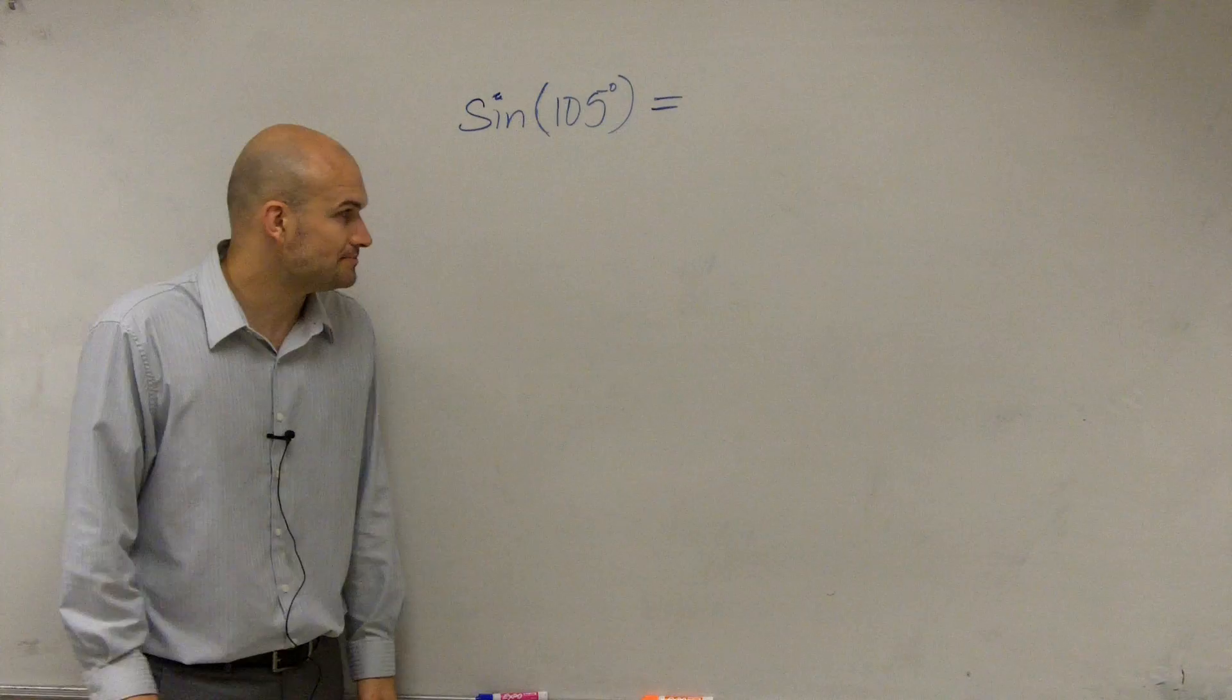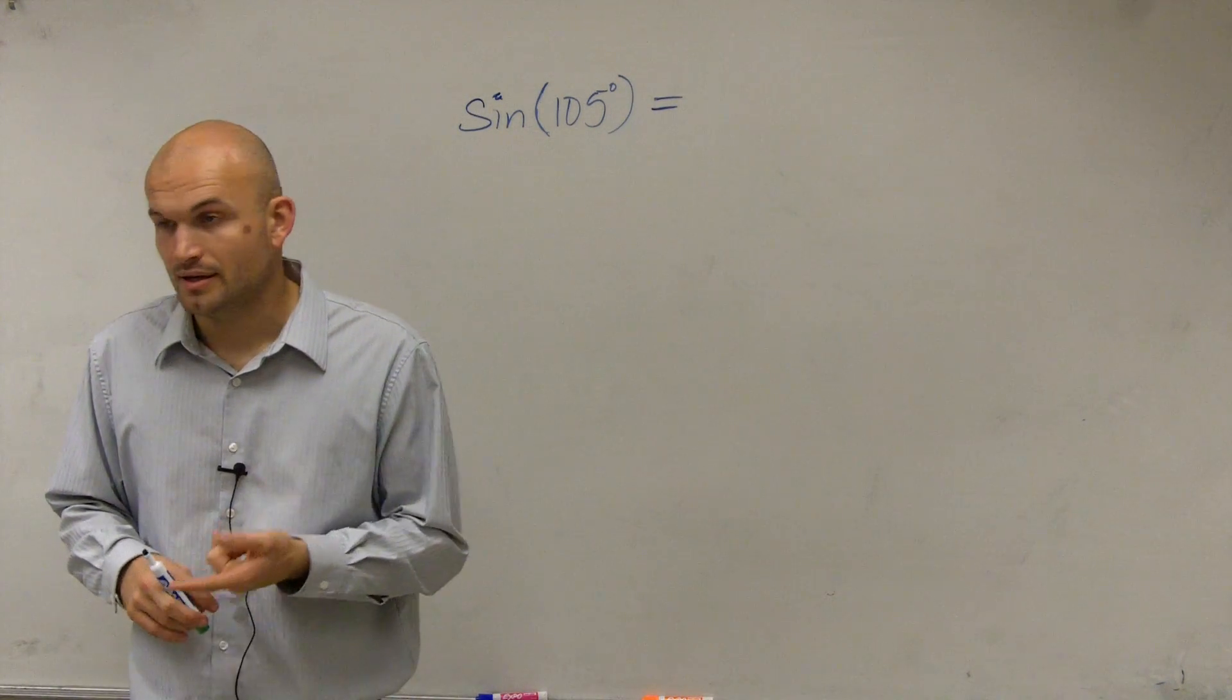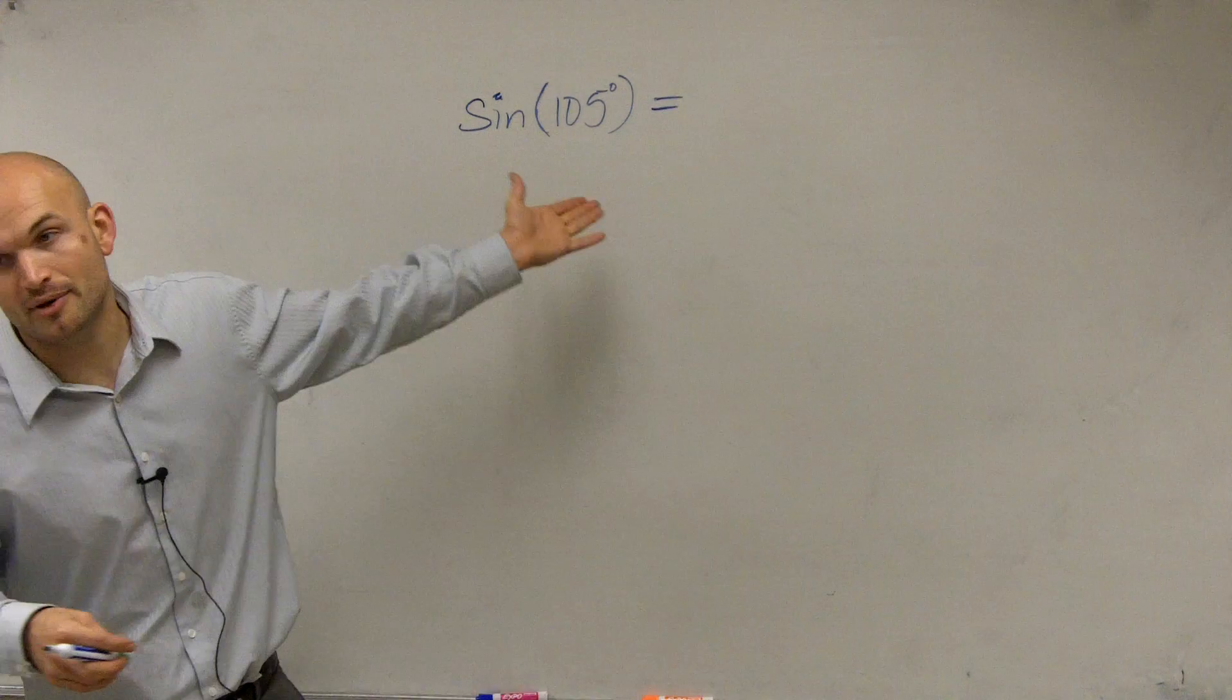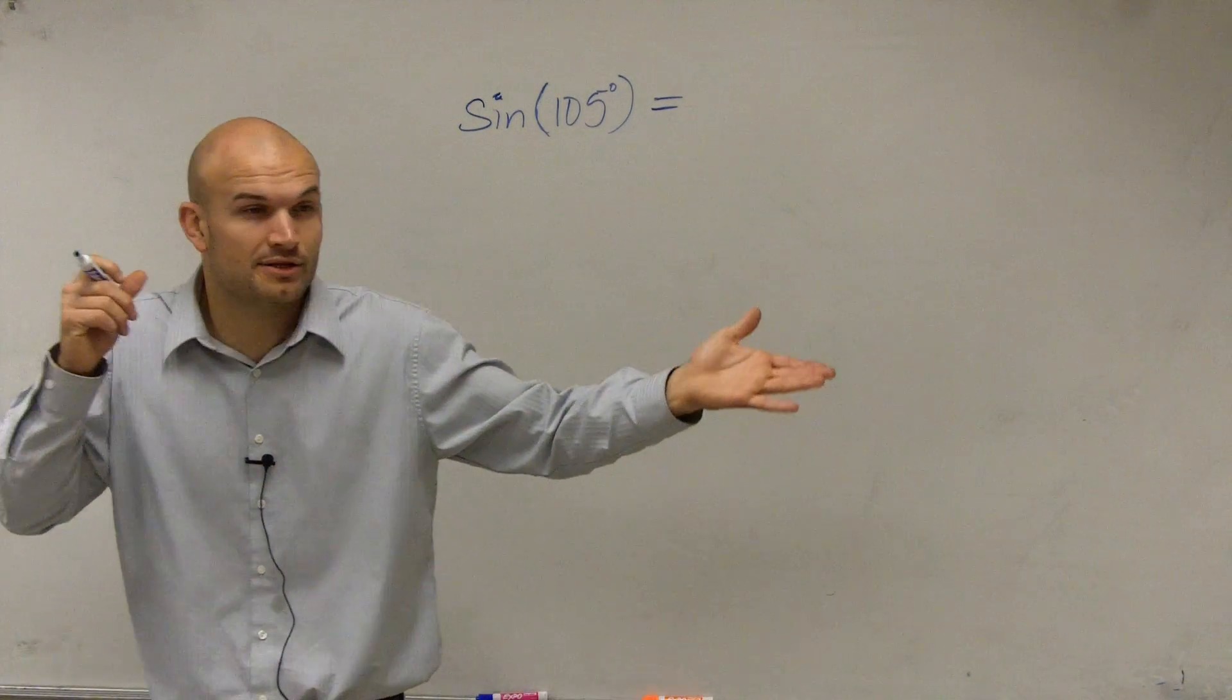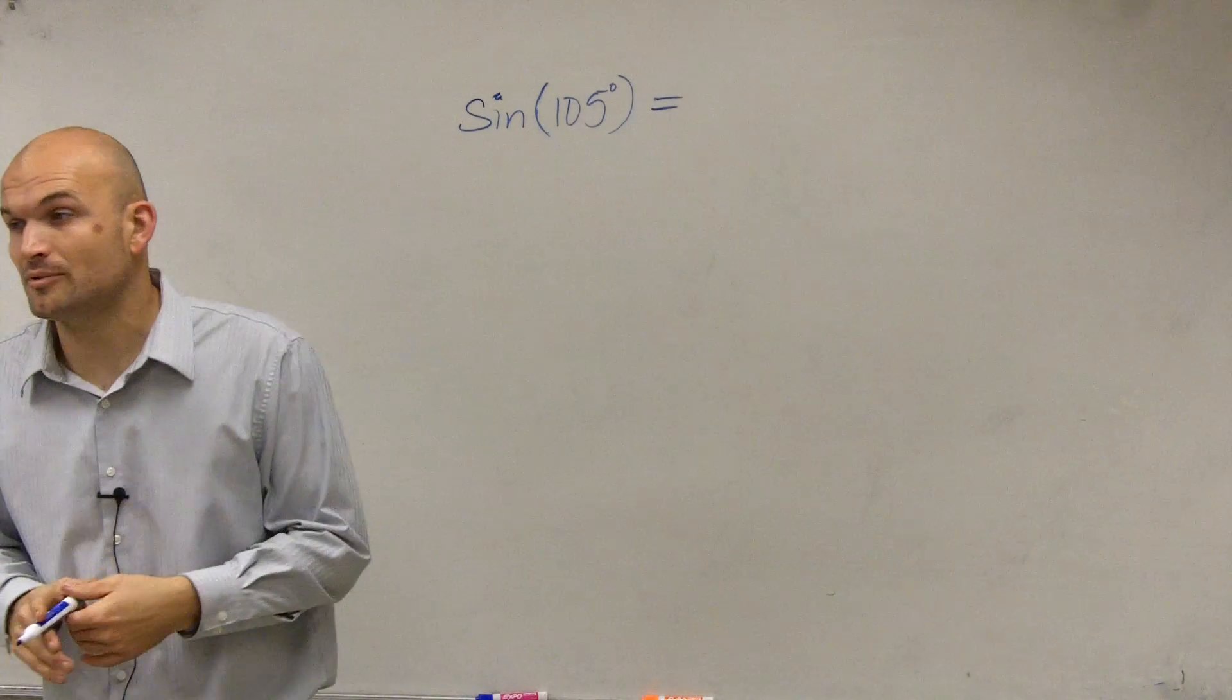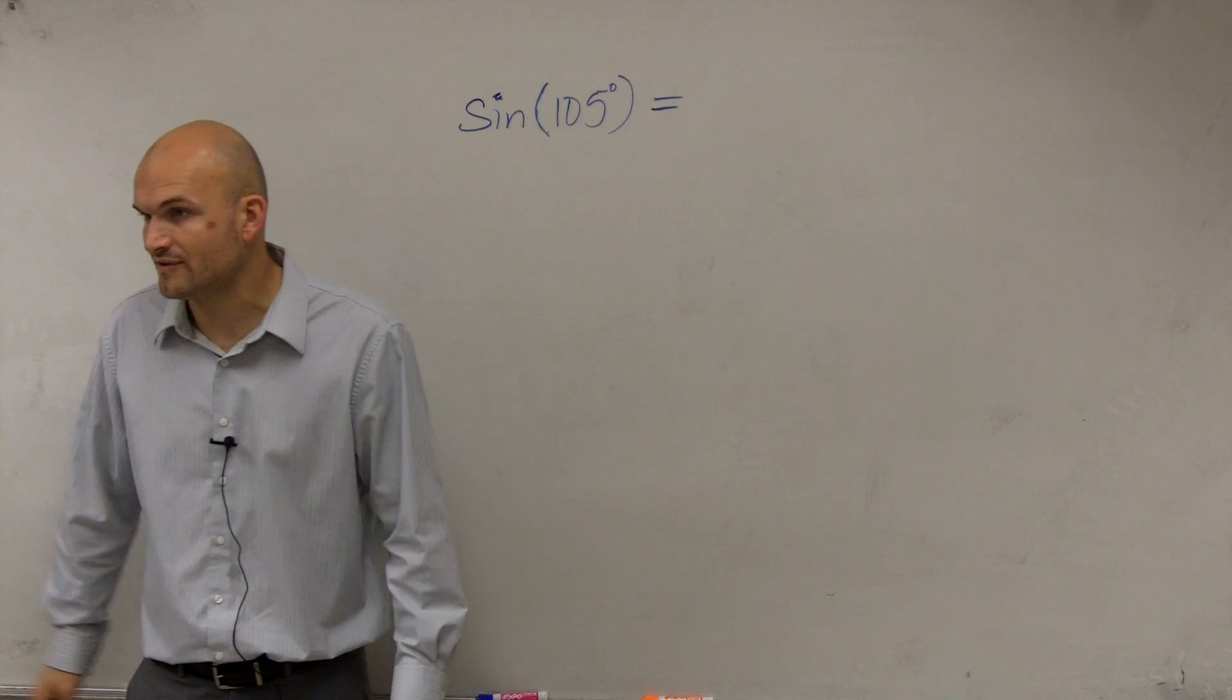So what we looked at then was applying the sum and difference formulas. We looked at it and said, can we break up 105 either to the sum or difference of two angles that we can evaluate on the unit circle? An example would be like 60 and 45, which would add up to be 105.